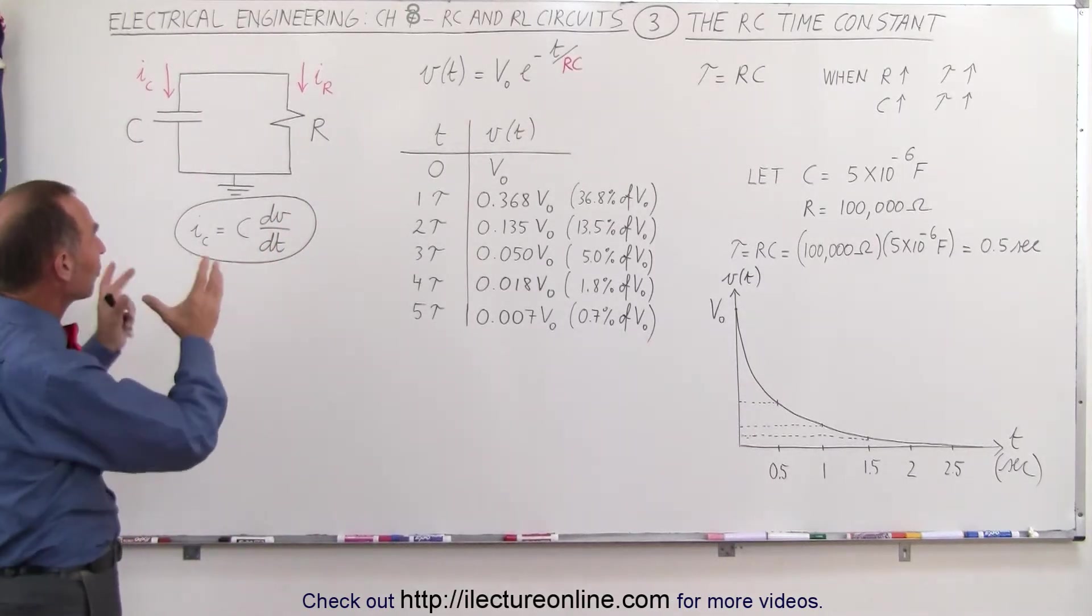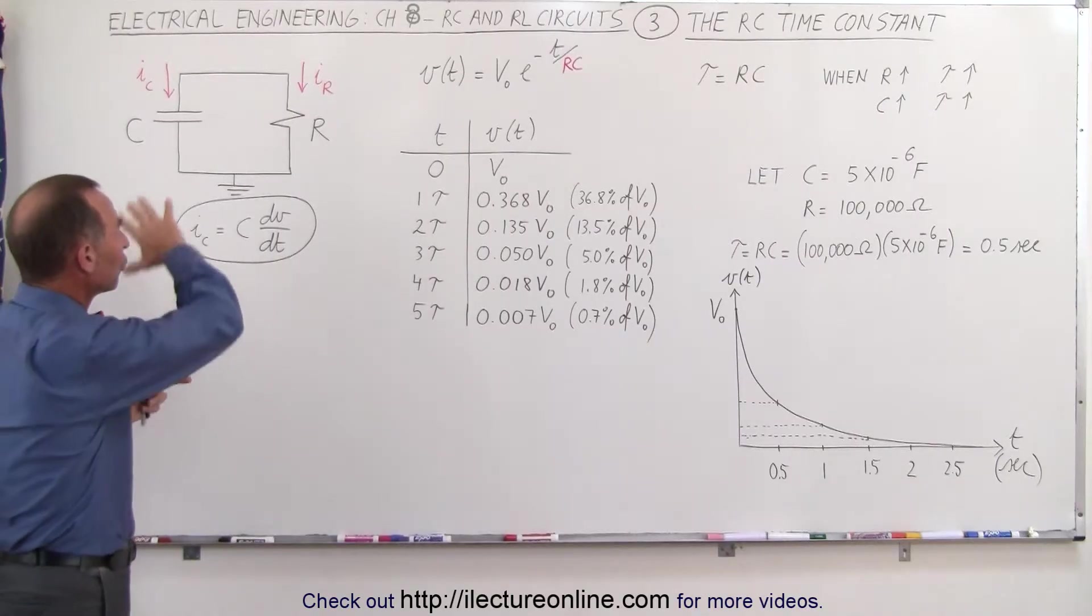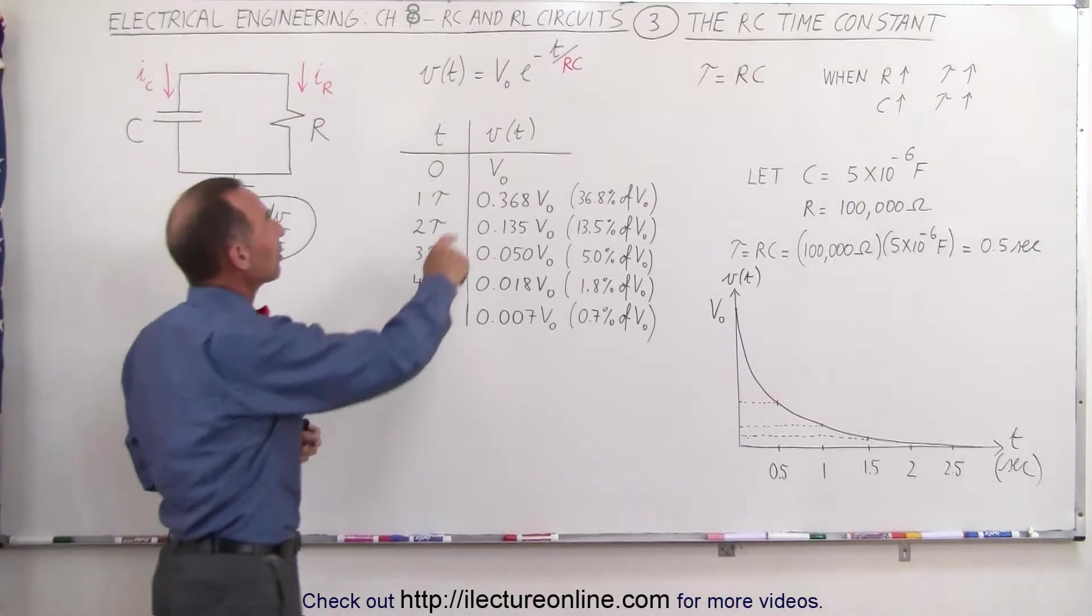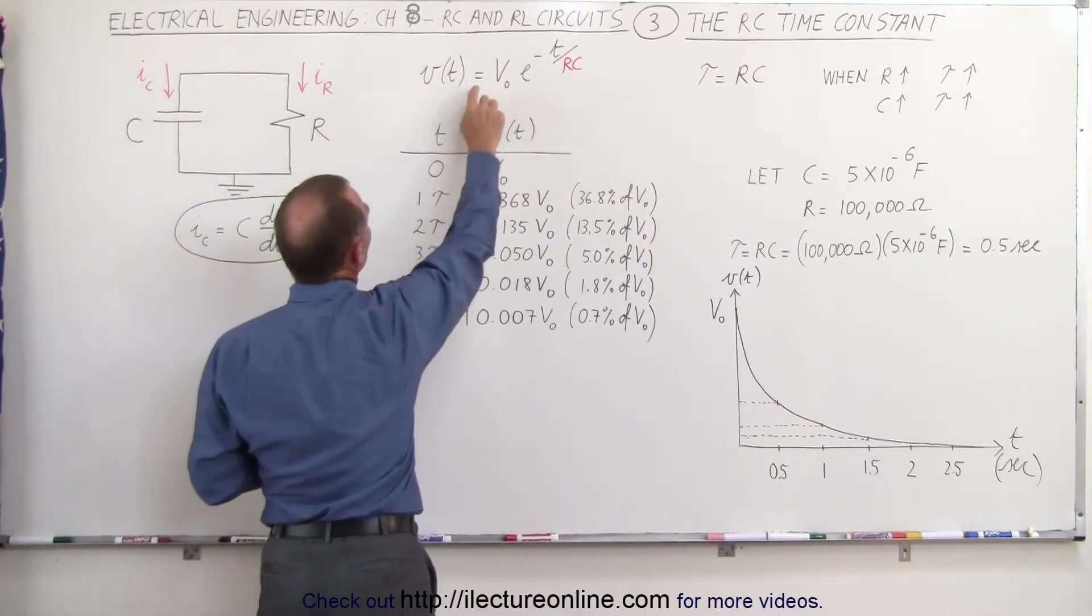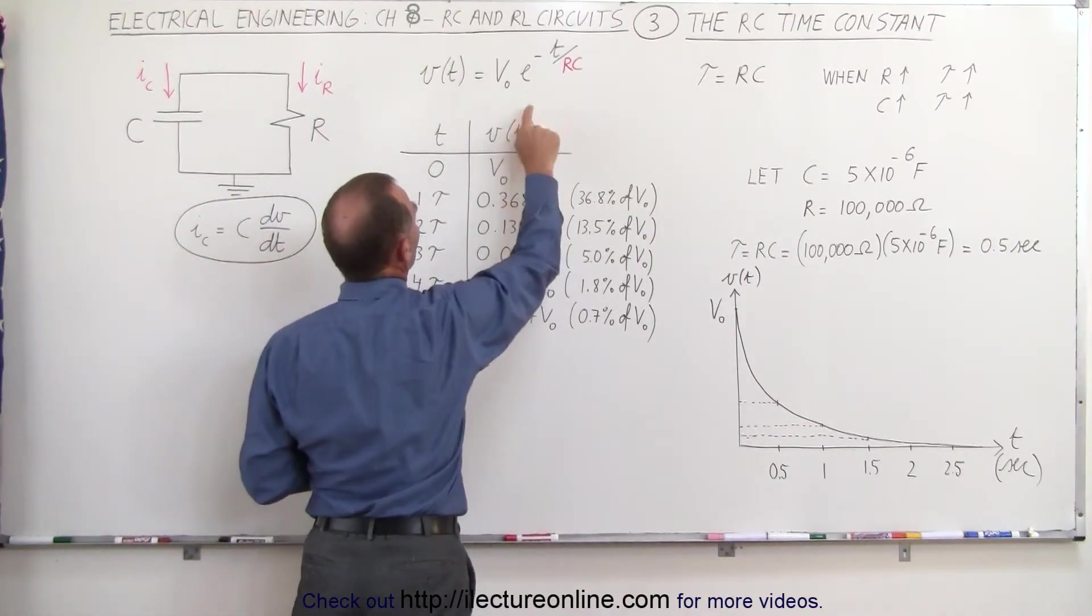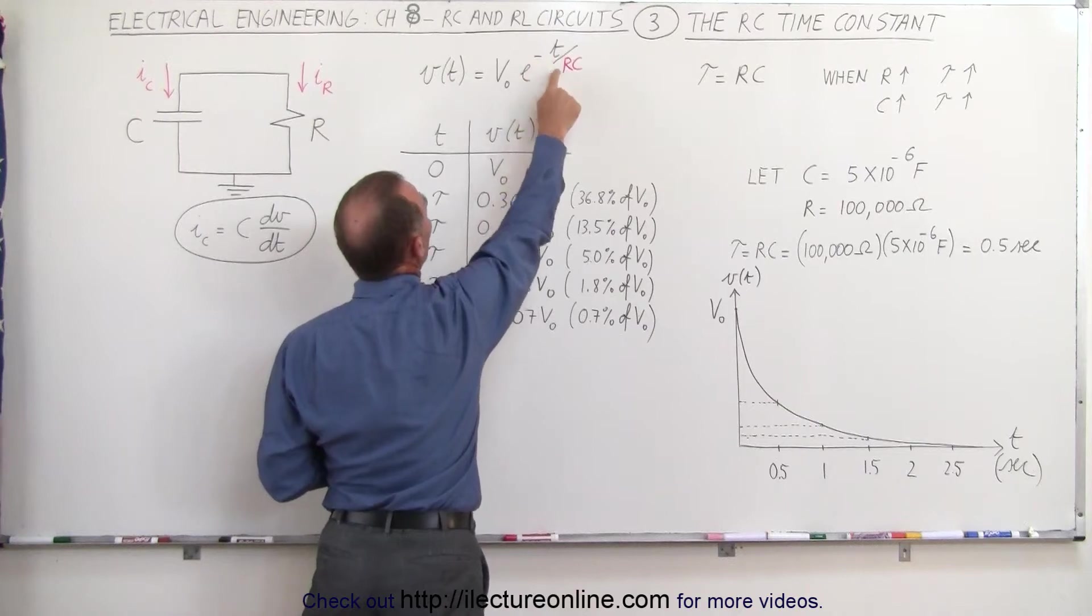If we solve for the current through the whole circuit, we end up with an equation that looks like this: the voltage across the capacitor is equal to the initial voltage across the capacitor times e to the minus t over RC.